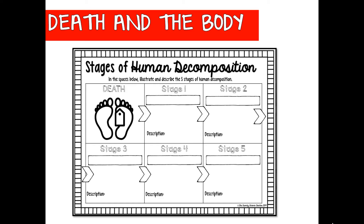If you have this worksheet, pause the video now and research the five stages of human decomposition — what happens after death in steps one through five. There are great videos about this on YouTube, and you can do a quick Google search of 'five stages of human decomposition.' Then come back and we'll move through the different stages and talk about what you have researched.